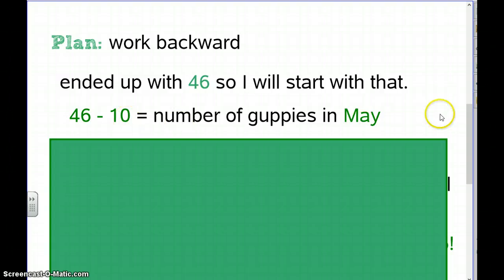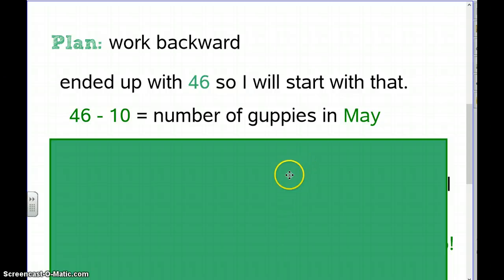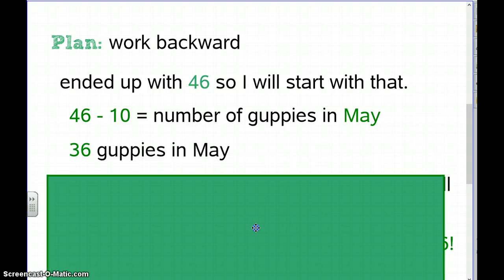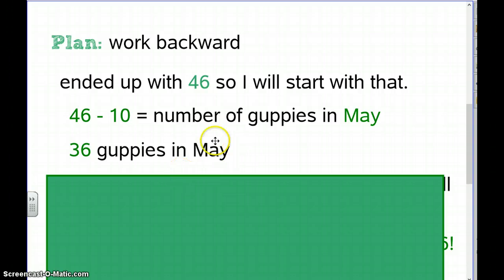46 minus 10 is mental math — that equals 36. So moving backwards, we now know that he had 36 guppies in May.